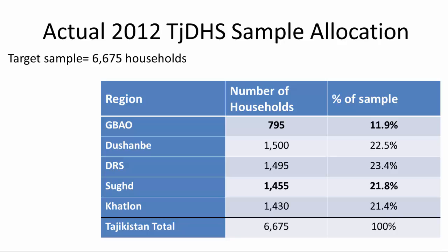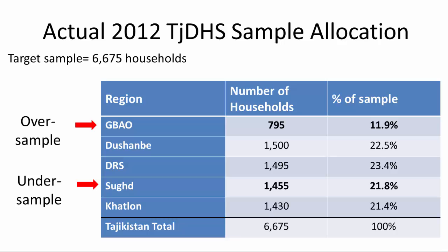So back to Tajikistan. In order to include enough households to provide representative data at the regional level, we must over-sample in regions with smaller populations and under-sample in regions with larger populations. The total number of households in the sample, around 6,675, remains the same, but the households are redistributed to select more from smaller regions. Even though Sugd has been under-sampled, our sample of 1,455 households is large enough to produce reliable estimates. Oversampling in Gabau has ensured we have enough households for reliable estimates there as well. Dushanbe was also oversampled and has the largest sample size because it is an urban-only region.